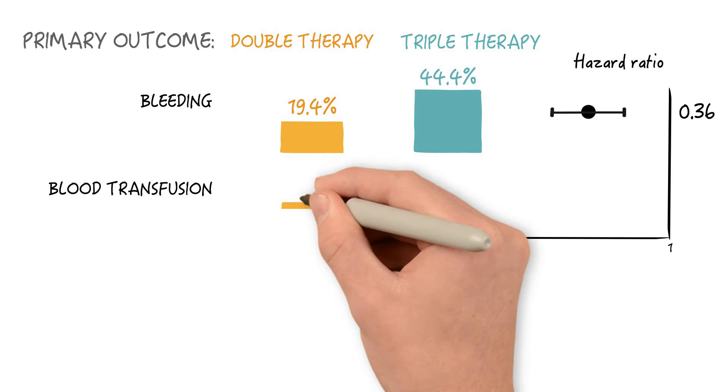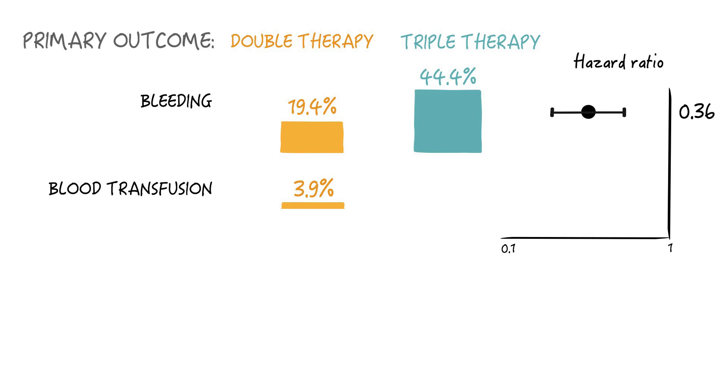What about blood transfusions? 3.9% of patients in the double therapy group received blood transfusions in the 12-month period following stent implantation versus 9.5% in the triple therapy group. The hazard ratio was 0.39 and again this was statistically significant.